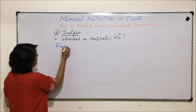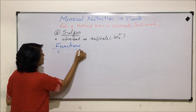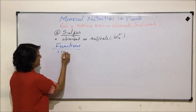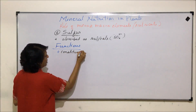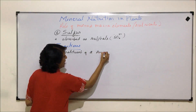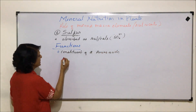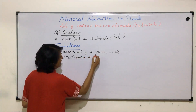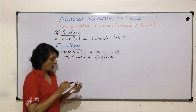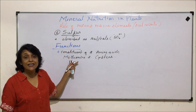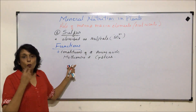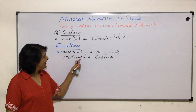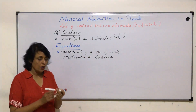The first function where sulfur plays a very important role is that sulfur is a constituent of two amino acids — methionine and cysteine. We know that amino acids join to form proteins, and these amino acids are part of many important proteins.